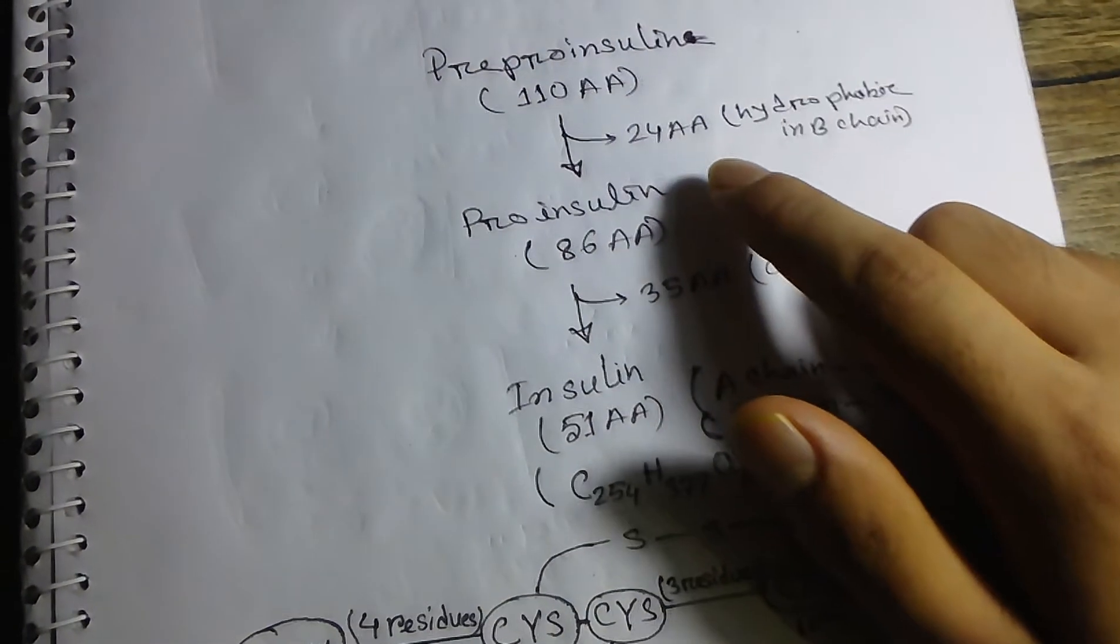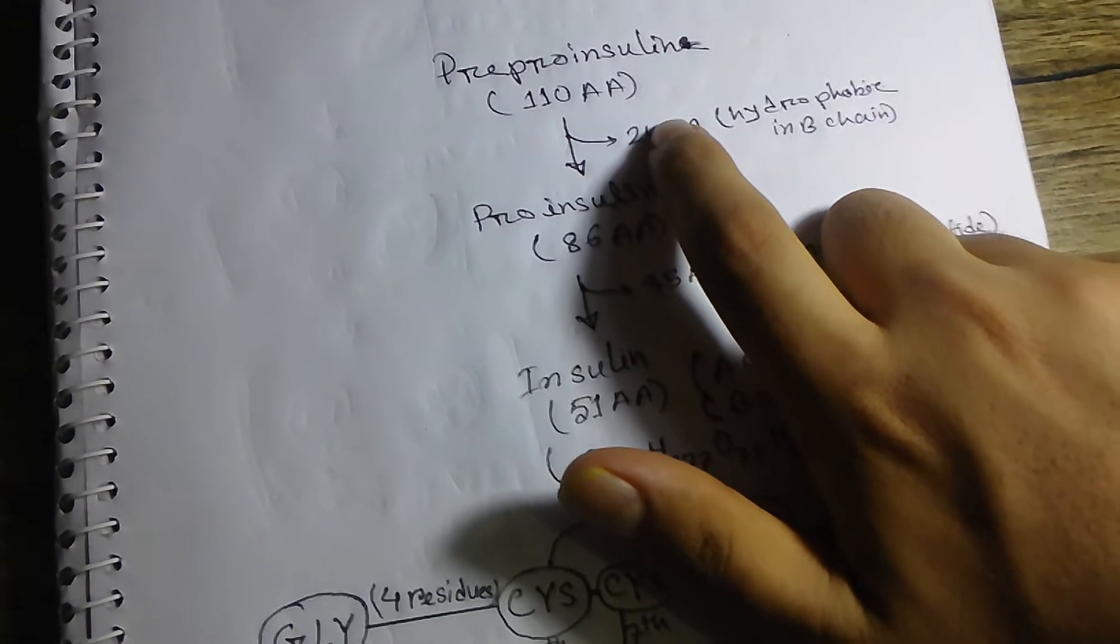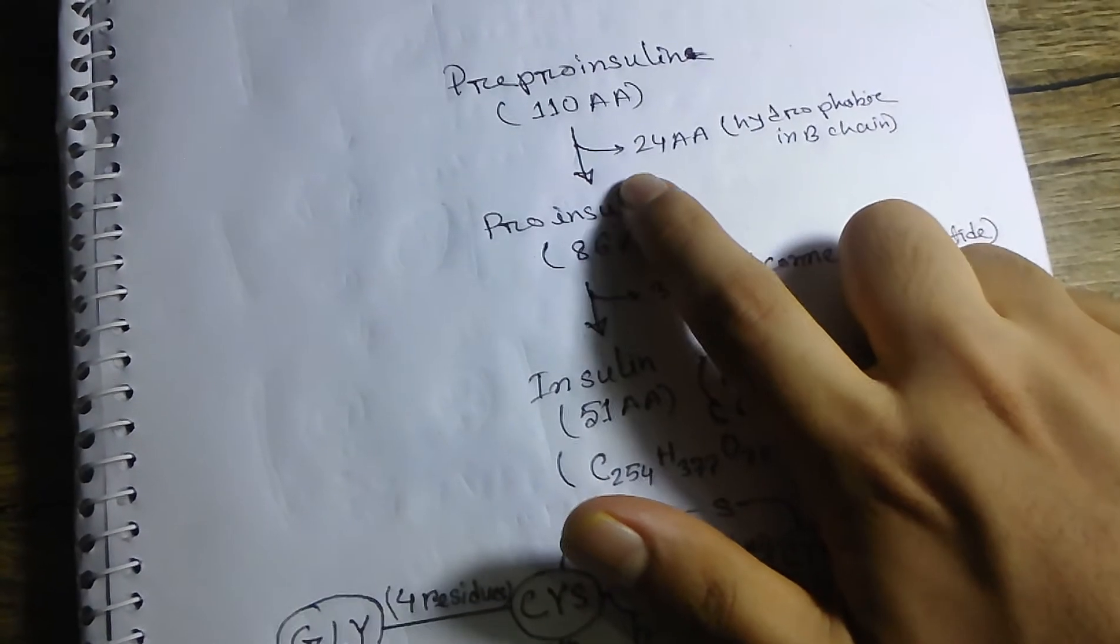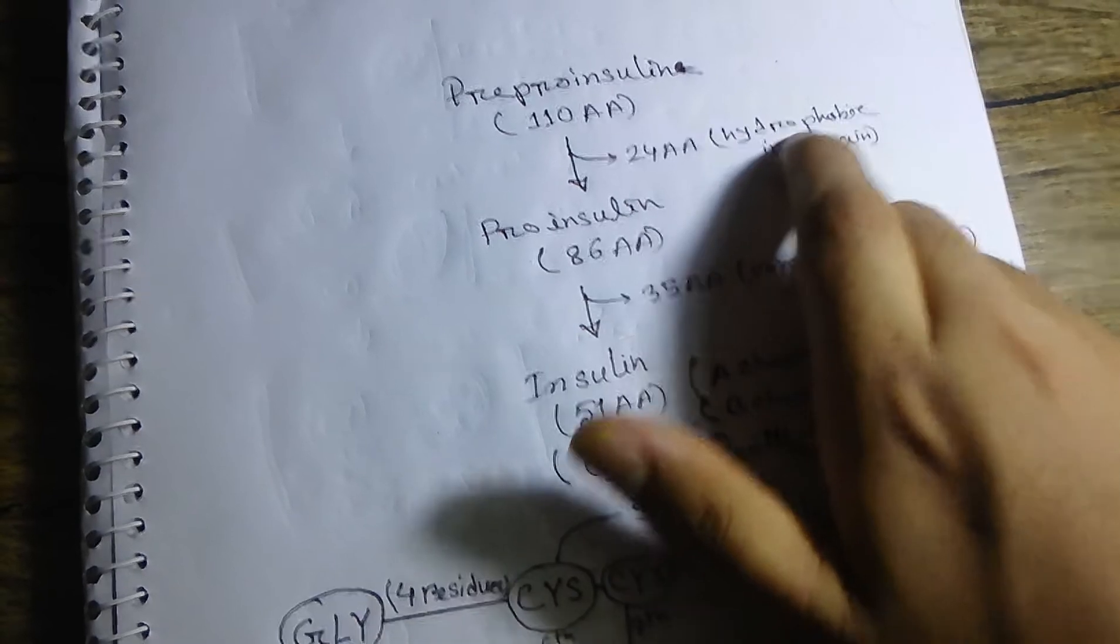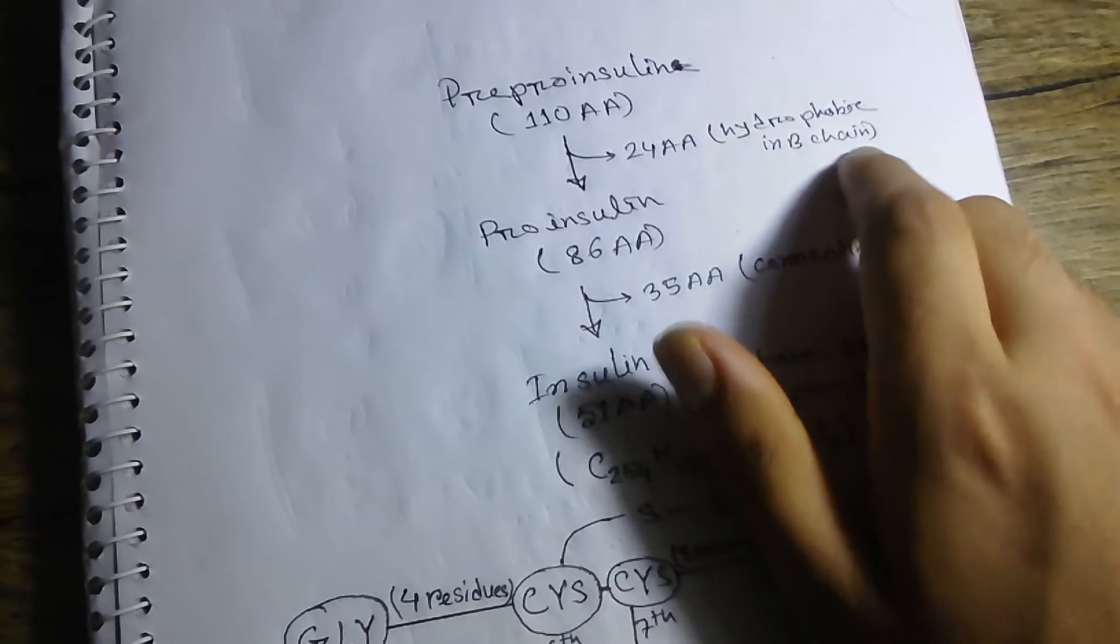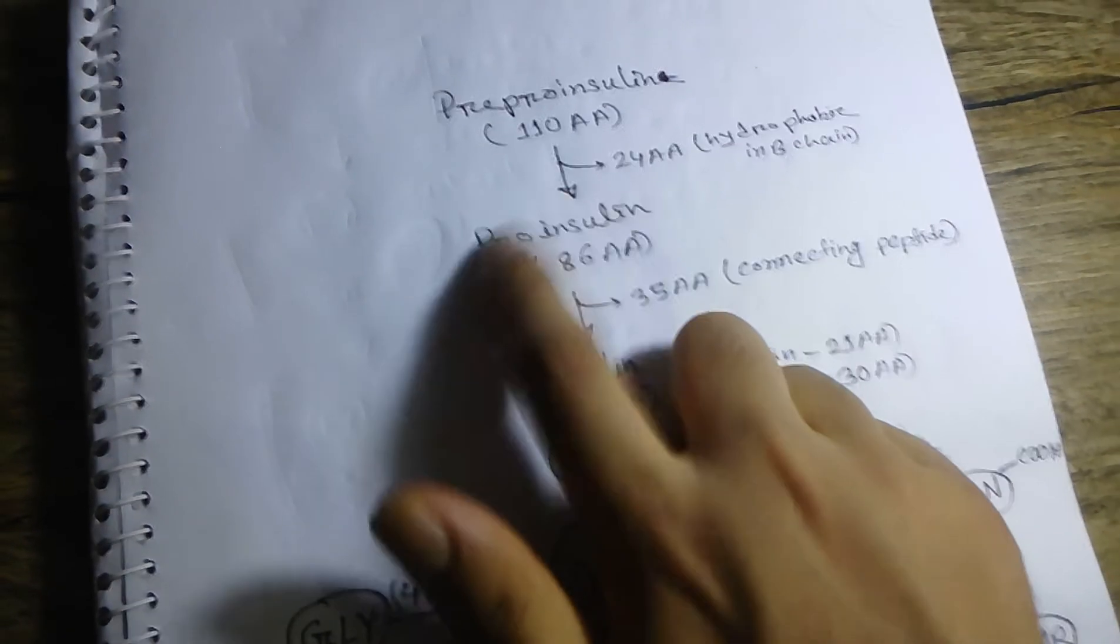We can get insulin from pre-proinsulin, which contains 110 amino acids. This includes 24 amino acids which are hydrophobic, present in the signal sequence. If we remove this 24 amino acid sequence, we get proinsulin which contains 86 amino acids.